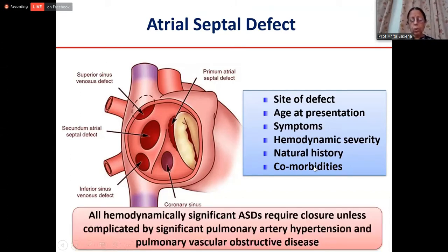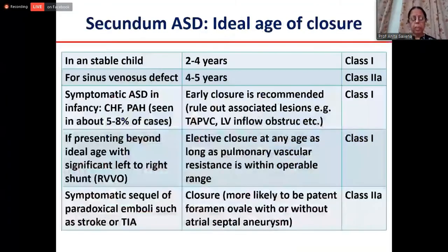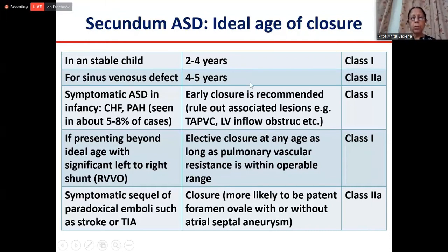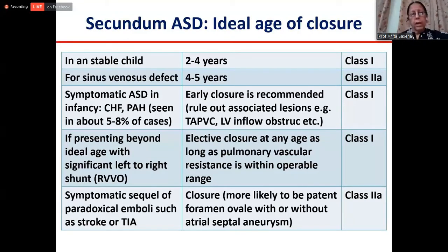Conventionally, all hemodynamically significant atrial septal defects — where flow is more than two-to-one and there is right ventricular volume overload on echocardiography — should be closed, unless there is significant pulmonary arterial hypertension or Eisenmenger syndrome. In a stable child, the ideal age of closure is two to four years. There is no need to hurry surgery or intervention in infancy. For sinus venosus defect, we generally wait a little longer since operating can produce some obstruction to the superior vena cava; most surgeons are comfortable when the child is more than 12–15 kilograms.